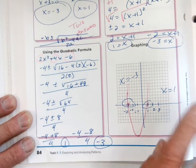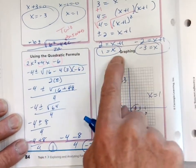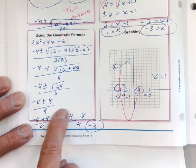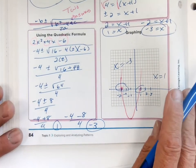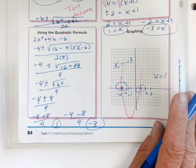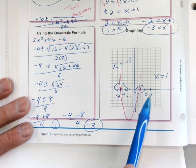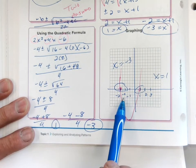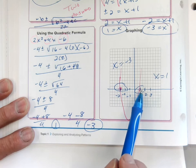We got the answers by factoring, by completing the square, and by the quadratic formula. Finally, these are also x-intercepts. I graphed it on Desmos, and where it intersects the x-axis is at -3 and 1.